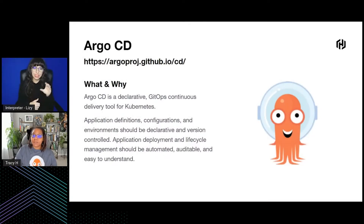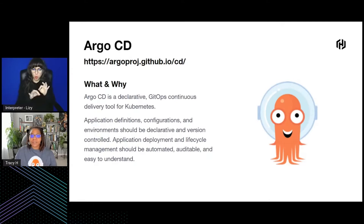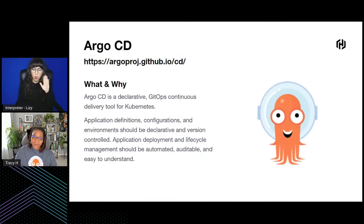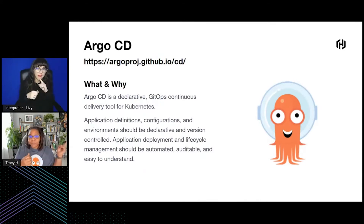The CD in Argo means continuous delivery. Argo CD is a GitOps tool that follows a Git-based workflow. It's a continuous delivery tool for Kubernetes that's essentially a GitOps controller, and it does two-way synchronization. Argo continuously monitors running applications, compares the live state against the desired state in Git, and applies it to the cluster. This happens in both ways — from Git to the cluster and from the cluster back to Git.